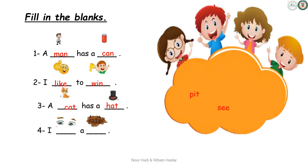Nice. And the last sentence, sentence number four. Look at the picture and tell me — what do you see? Yes, I see two eyes. And what do you do with your eyes? Excellent. See. So, I see a pet.